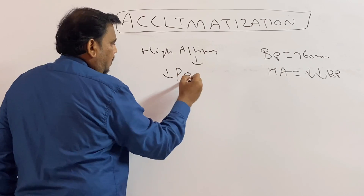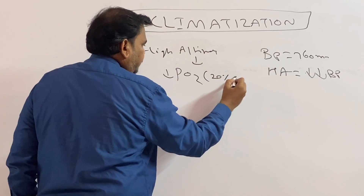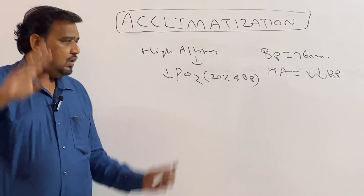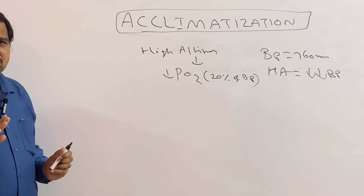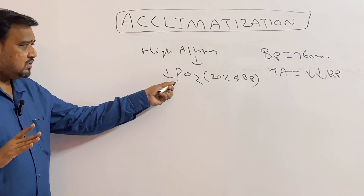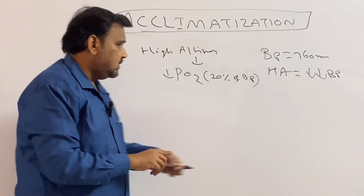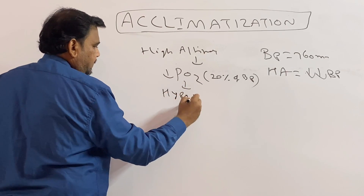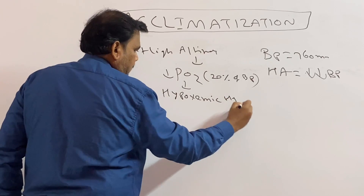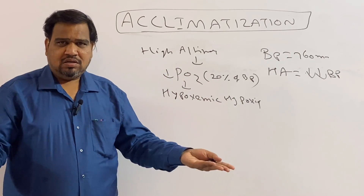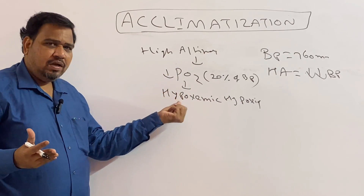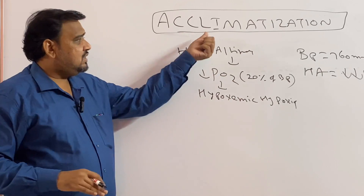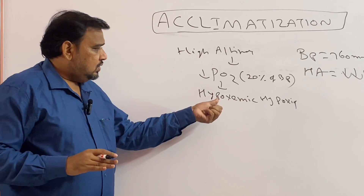So when total barometric pressure is decreased, the partial pressure of oxygen is obviously going to be decreased, because oxygen is 20% of barometric pressure. So when going to high altitude, there is decreased partial pressure of oxygen because total barometric pressure itself is decreased. This is called hypoxemic hypoxia — hypoxia meaning decreased oxygen level.